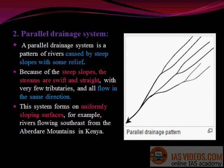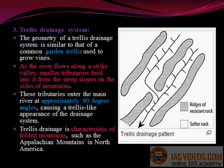Parallel drainage system: A parallel drainage system is a pattern of rivers caused by steep slopes with some relief. Because of the steep slopes, the streams are swift and straight, with very few tributaries, and all flow in the same direction. This system forms on uniformly sloping surfaces, for example, rivers flowing southeast from the Abadir Mountains in Kenya.